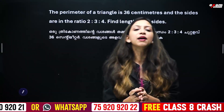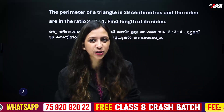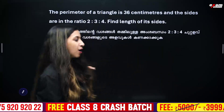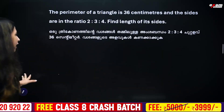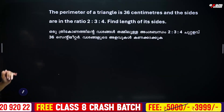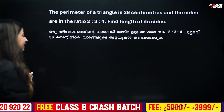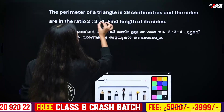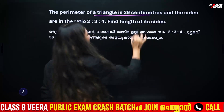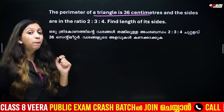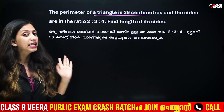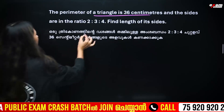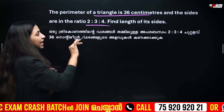The perimeter of a triangle is 36 cm and the sides are in the ratio 2 is to 3 is to 4. Find the length of each side.